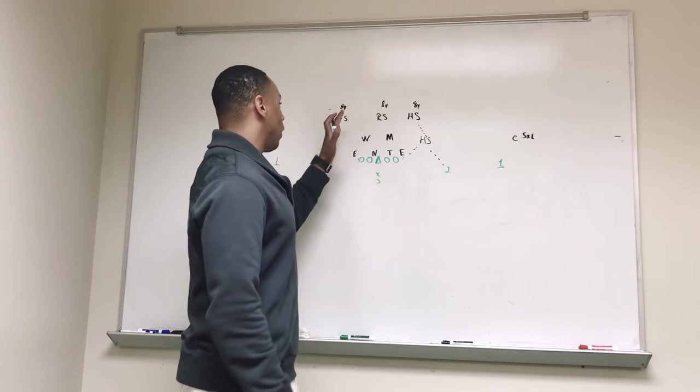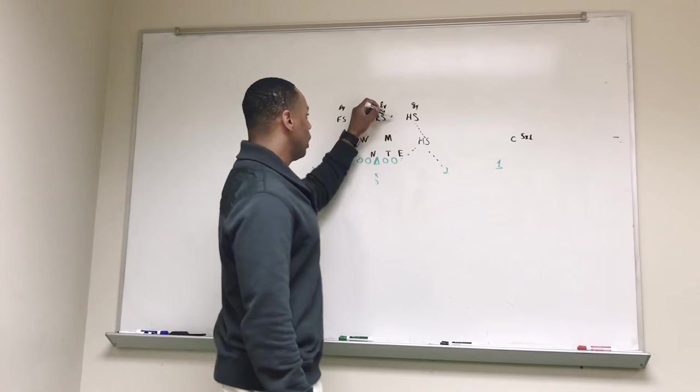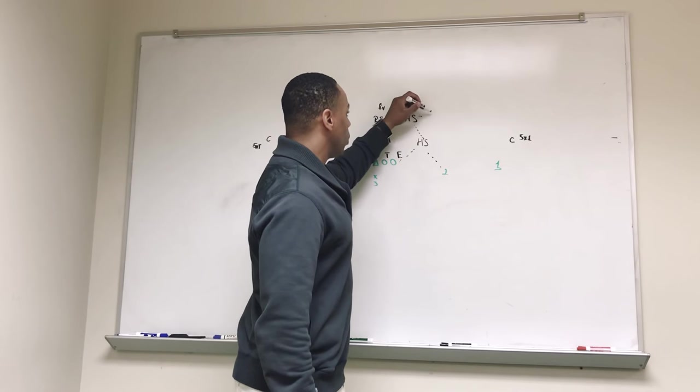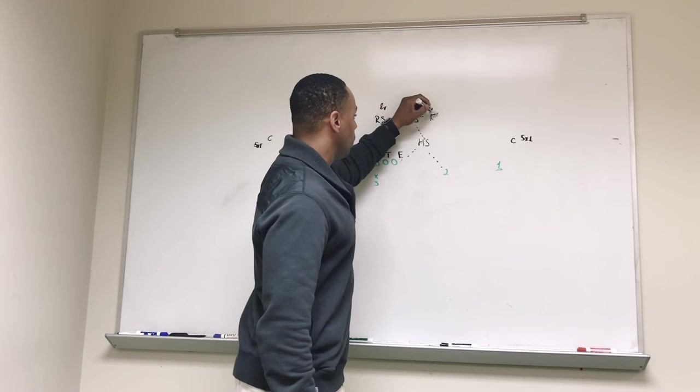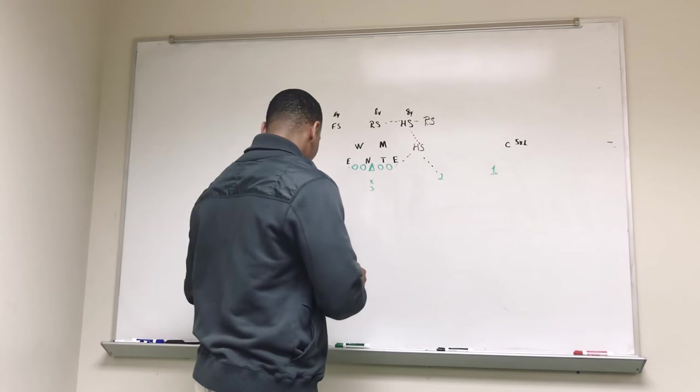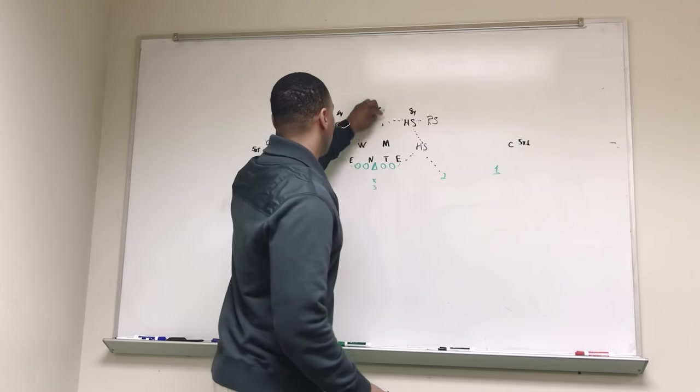And that allows us to be on the hashes with our other two safeties. So then our rover safety, he would walk out here and be on the hash, and again he is still flat footed at 8 yards deep.